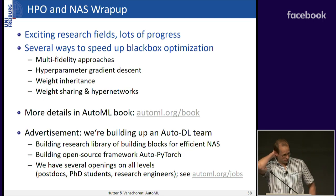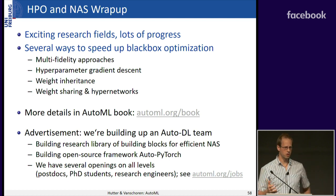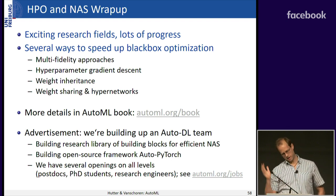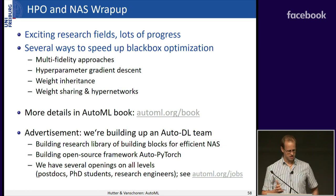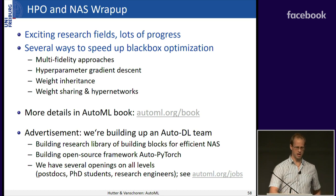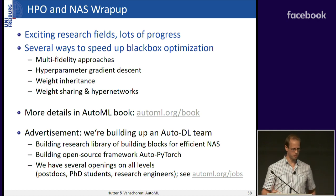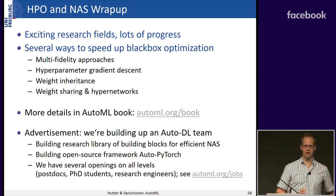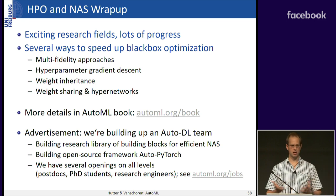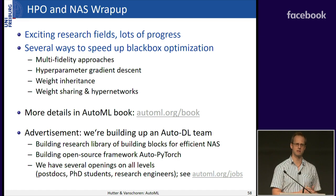To wrap up: hyperparameter optimization and neural architecture search are really exciting fields with several ways to go beyond black-box optimization. We are building an AutoML automatic deep learning team — building a research library of different building blocks for efficient NAS, an open-source framework called AutoPyTorch, with several openings at all levels. That's the end of my part; we'll now take a five-minute break. I encourage you to stretch your legs, but we'll also take some questions during this period.